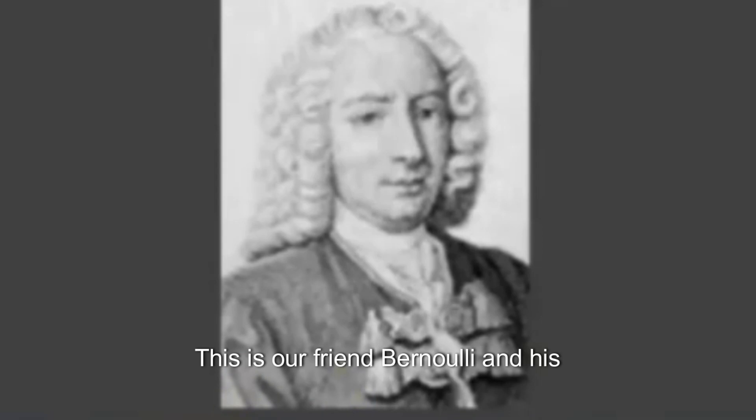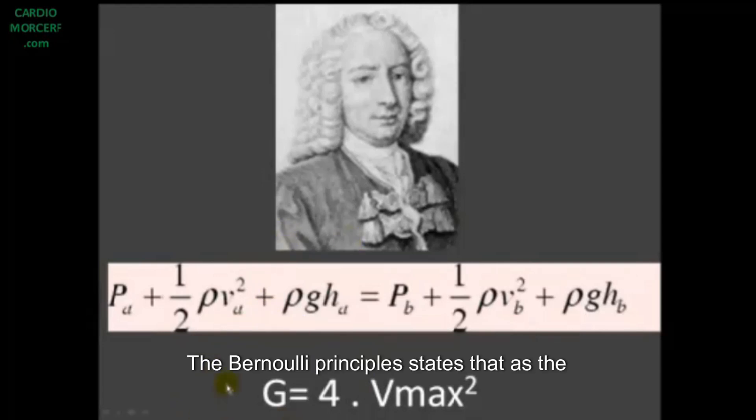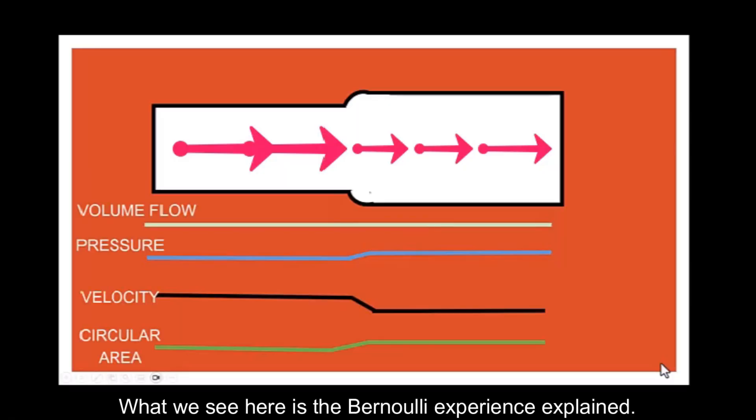This is our friend Bernoulli and his complicated equation relating pressure and velocity of a fluid. Here enters variables as fluid density and others that don't interest us right now. Then, if you take only the important variables concerning blood as the fluid and the blood in circulation, this equation becomes the known g, or gradient, equals 4 times v max, velocity, maximal velocity. The Bernoulli Principles states that as the speed of a moving fluid increases, the pressure within the fluid decreases.